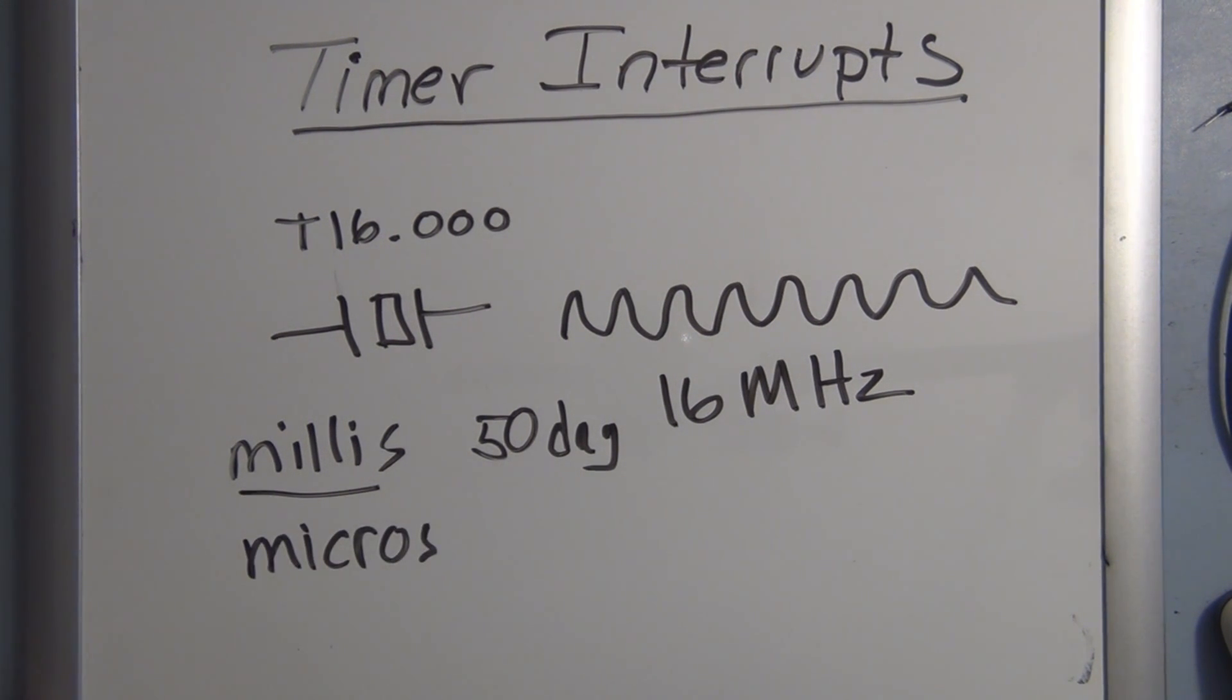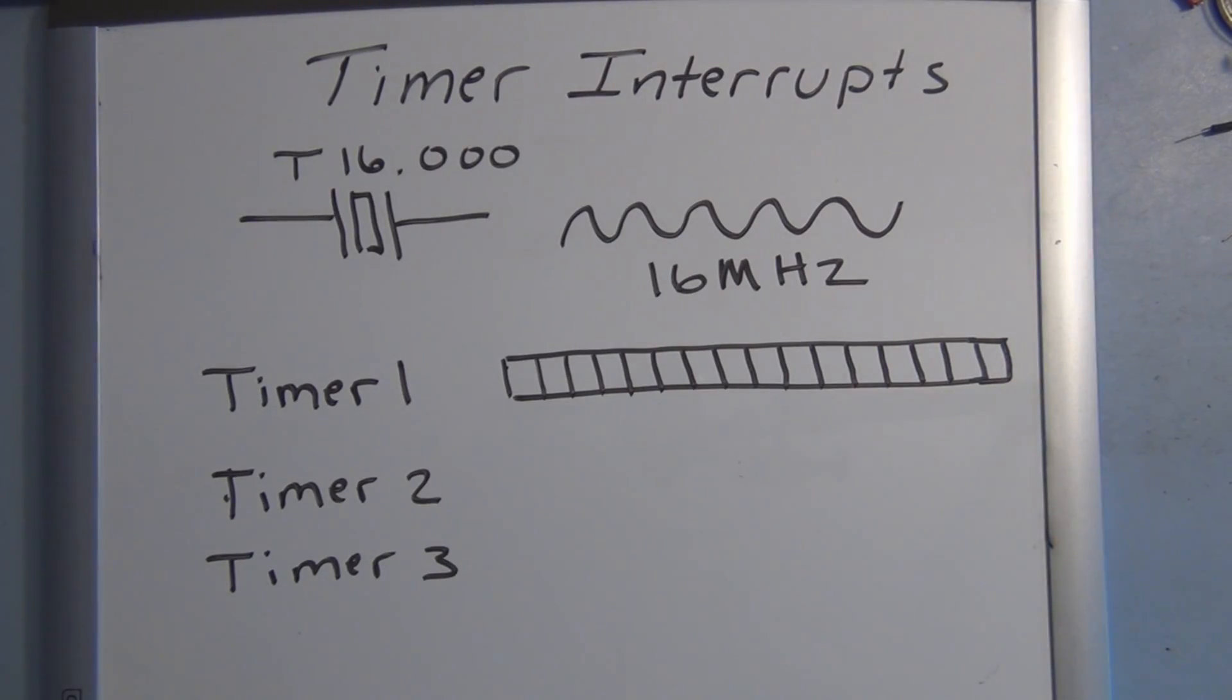There's also a microsecond function and it can count up to only 70 minutes before it resets. Also the delay, that's also based on the crystal. When you set a certain period of time that you want to delay to occur, it knows how long to delay based off of that crystal.